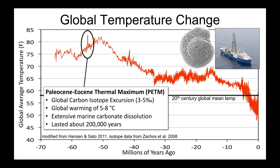This is a common graph that a lot of people see in an intro geology or earth history class. It's basically the temperature history of the last 65 million years or so, as reconstructed from oxygen isotope measurements of forams collected mostly through deep sea coring programs. I give popular talks, so I converted this temperature scale to Fahrenheit.